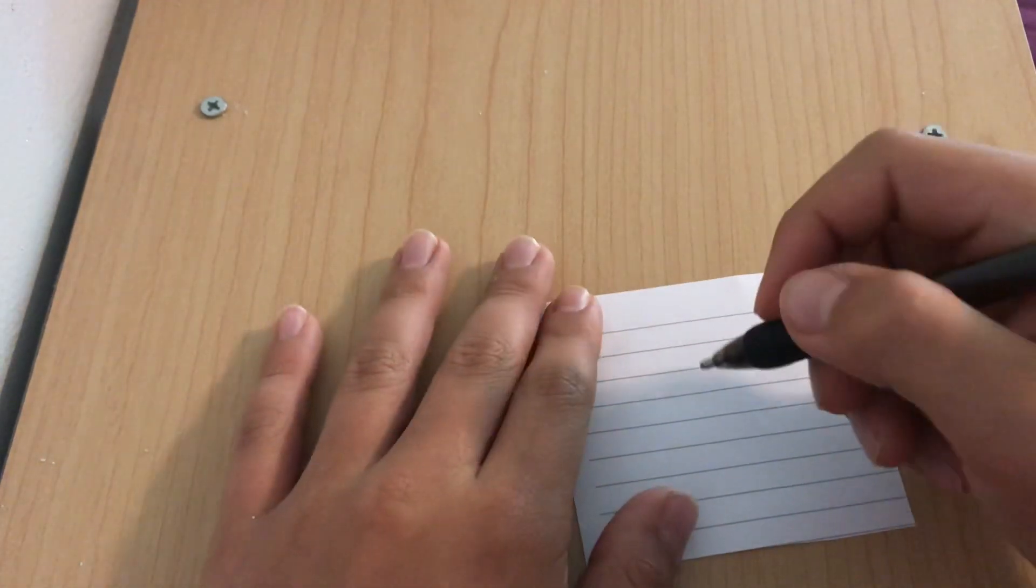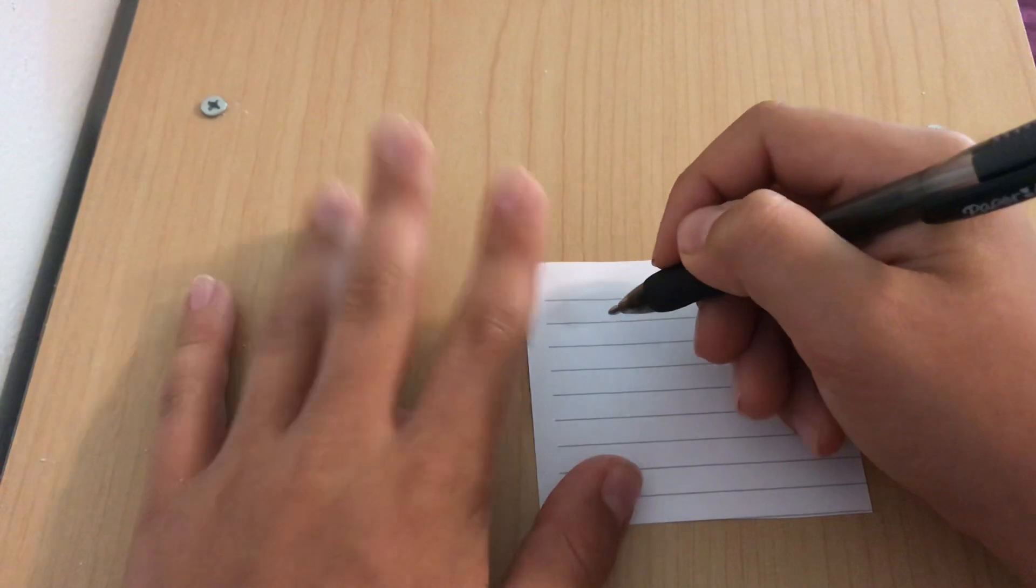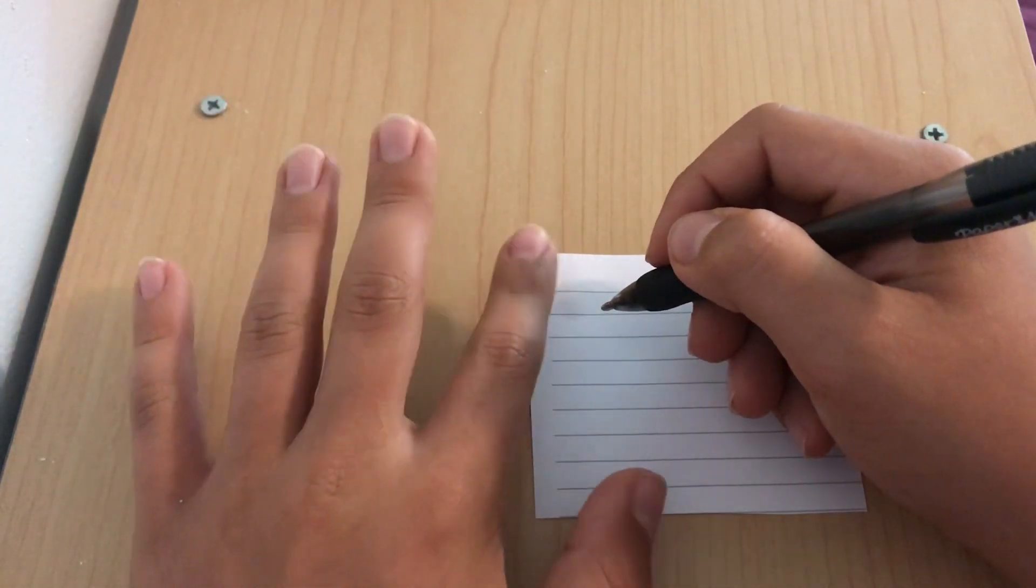Let's start off first by going right in the middle, right around here, and you're going to write the person's full name. Make sure it's full name, or it won't work.